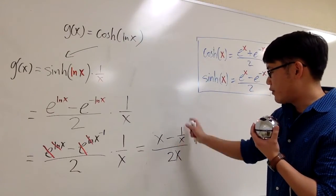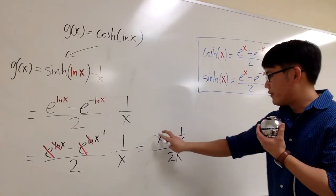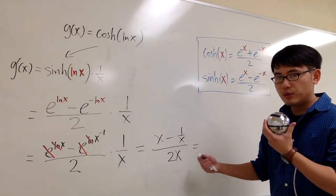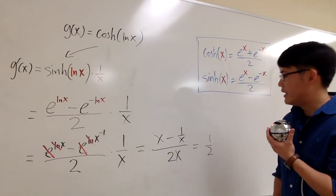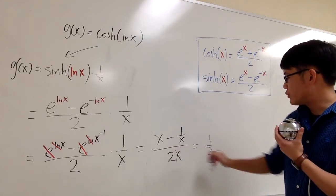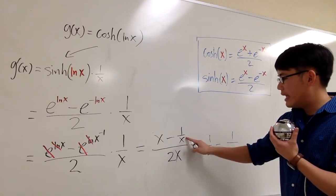And of course, we can split the fractions. So the first one is going to be x over 2 over x, which we get 1 half.